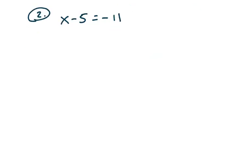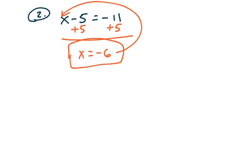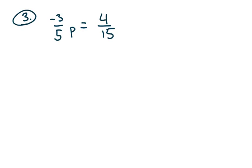Here's the next one: x minus 5 equals negative 11. Pause the video and try it for yourself. We're just going to do the opposite — the opposite of subtraction is addition. So add 5 to both sides to get x by itself. This gives x equals negative 6. You can check: negative 6 minus 5 is in fact negative 11.